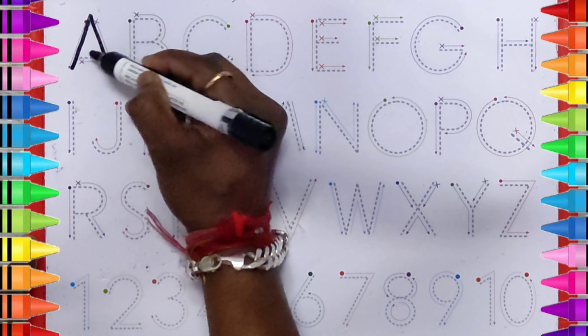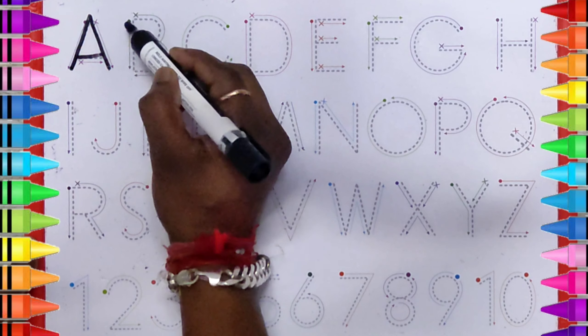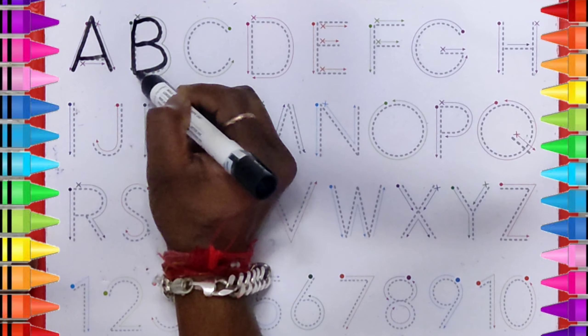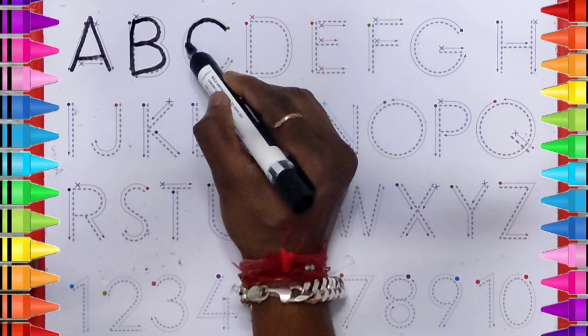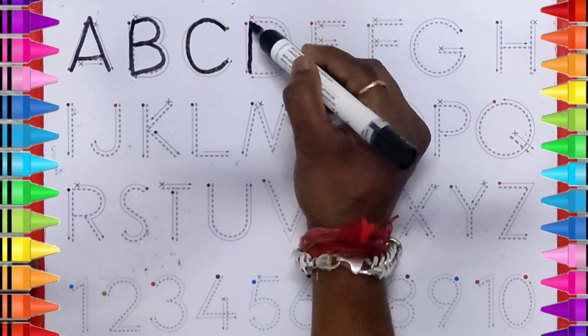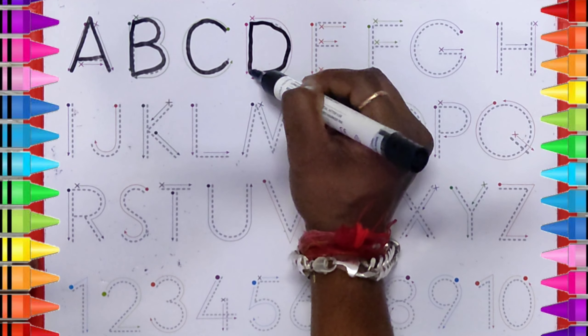A. A for Ant. B. B for Ball. C. C for Cat. D. D for Dog.